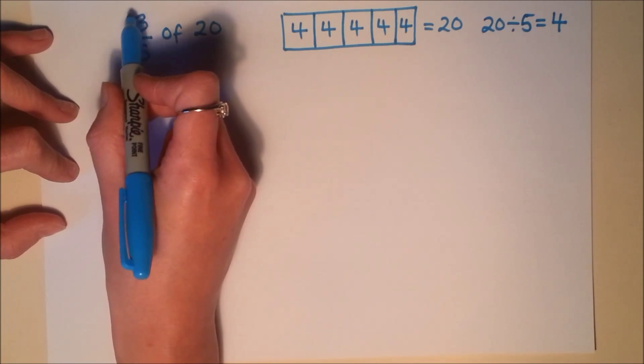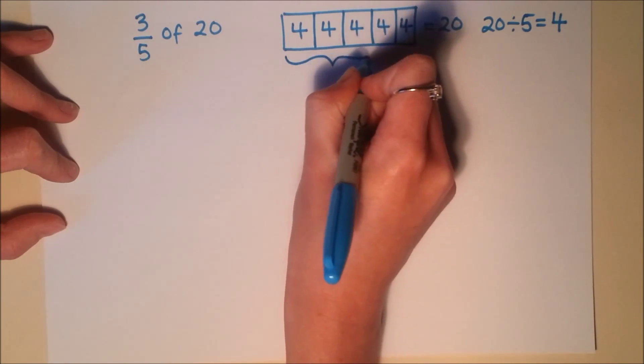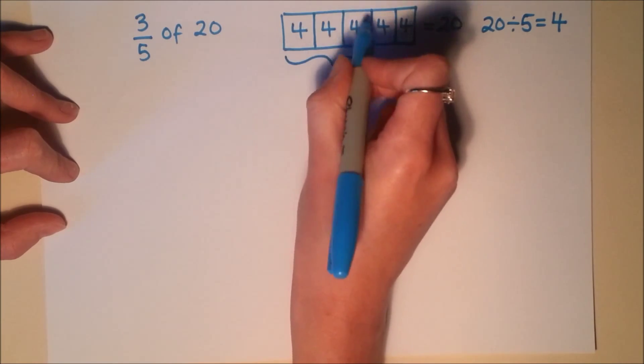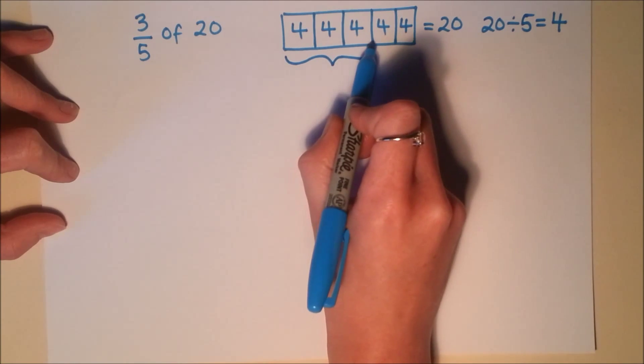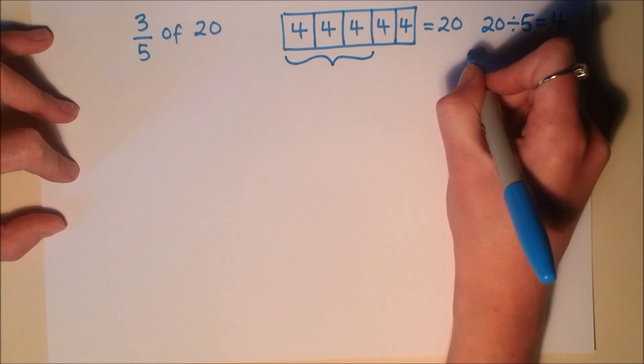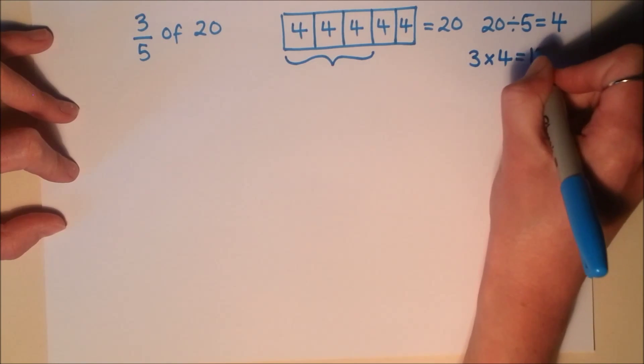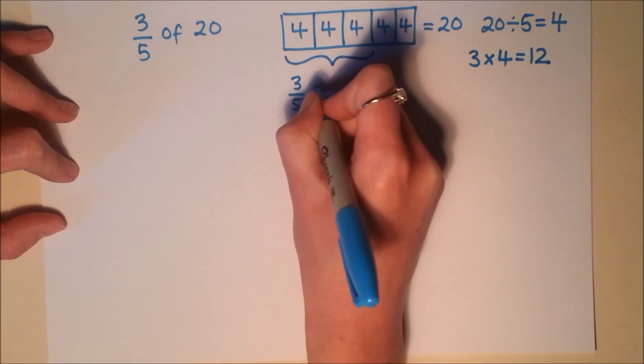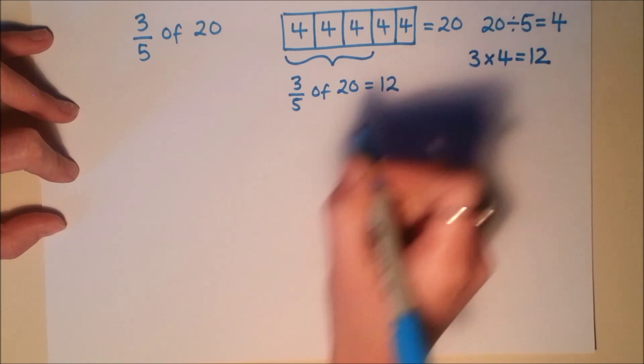Now look at the numerator. The numerator is 3, so that means we need 3 of these pieces. So I need to work out if I'm taking 3 of those pieces, well I'm going to have 4, 8, 12. So what I'm doing there is 3 lots of 4 to give me 12. So I know that 3 fifths of 20 is 12.